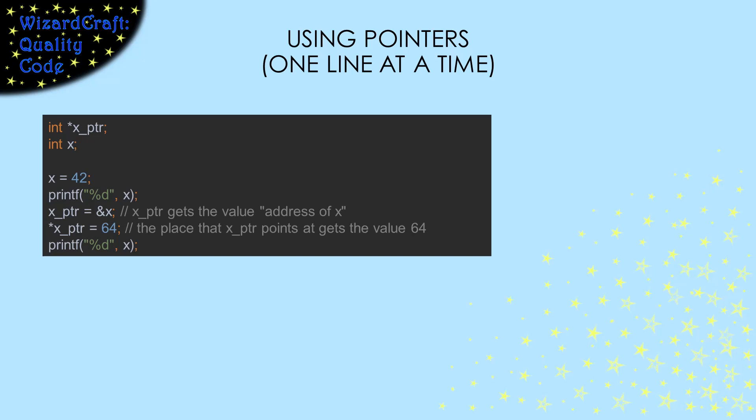Let's watch this code that uses pointers. I'm just going to be the machine. I'm going to execute one statement at a time. The first line declares a variable named x_ptr that will point to an integer. Then we declare x to be an integer. x gets the value of 42, so the 42 goes directly into x. So if we print out x, we'll get a 42.